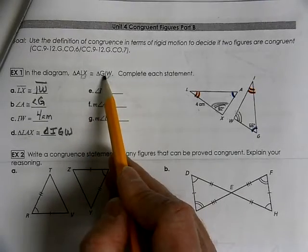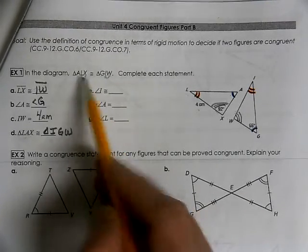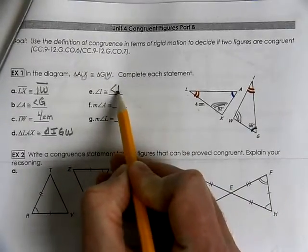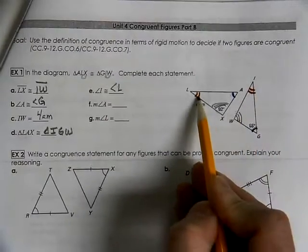Angle I is the middle letter, so it's going to be congruent to L, which is the middle letter, or red and red.